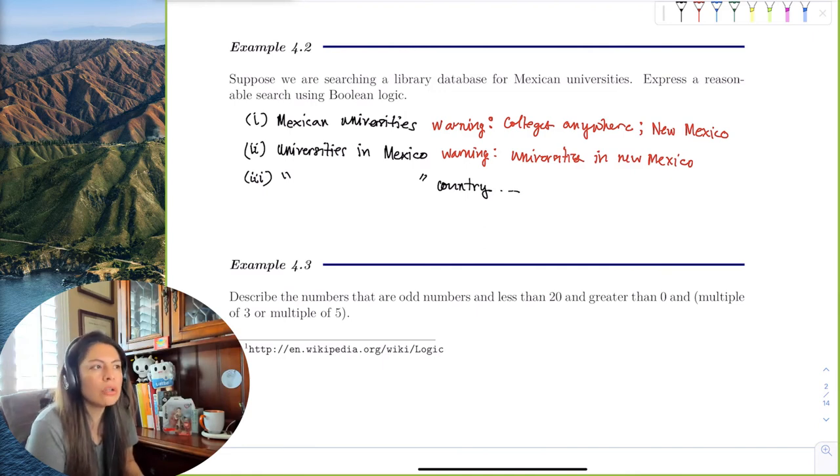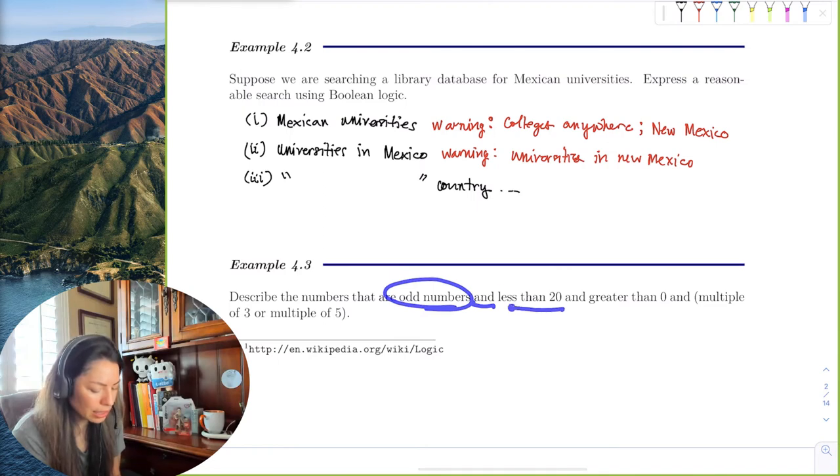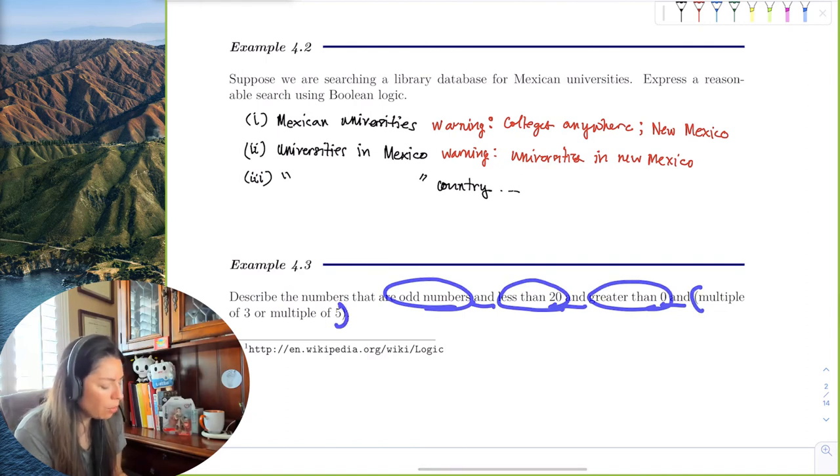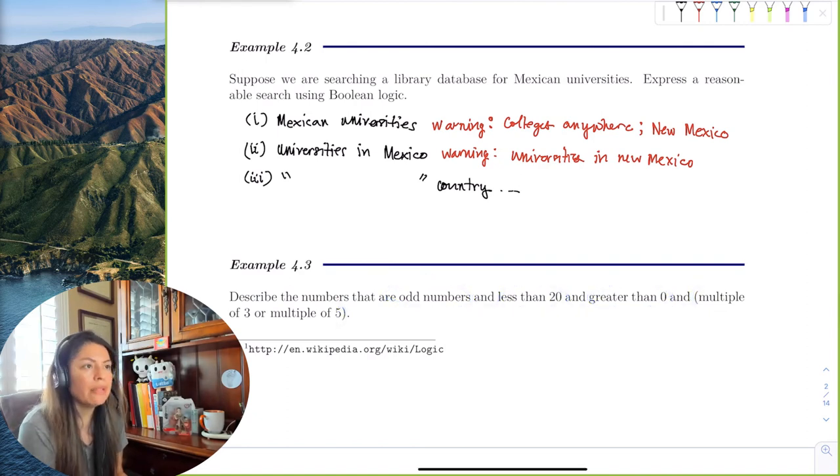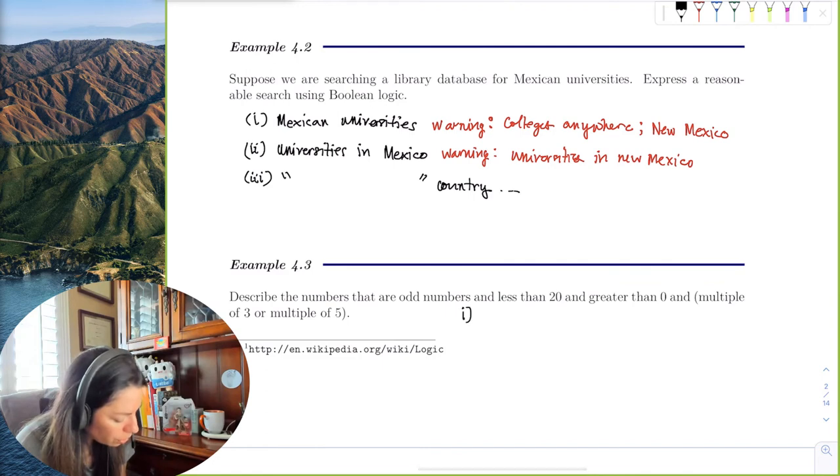Boolean logic is in these terms of sets. So if we describe the numbers that are odd, and less than 20, and greater than zero, and in parentheses, multiple of three or five. That's a lot, right? So the first thing we would want to do is look at it left to right, and we read left to right, so we'll do the math left to right. We'll look at odd numbers that are less than 20.